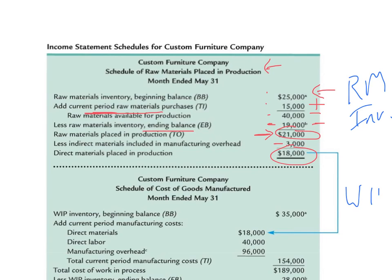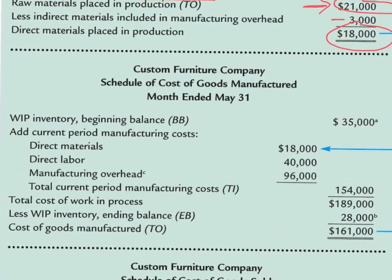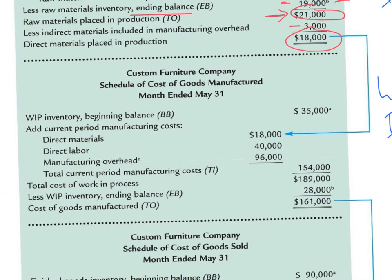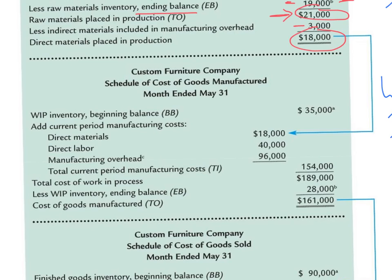Now we are going to look at the second schedule, the schedule of cost of goods manufactured, which relates to work in process inventory. The same equation applies: beginning balance plus transfers in minus ending balance equals transfers out. For work in process inventory, we start with a beginning balance of $35,000. Once we get to work in process, there are three elements being transferred in: direct materials, direct labor, and manufacturing overhead.